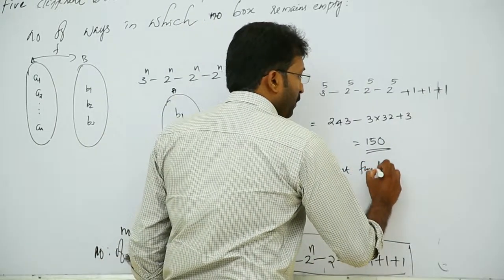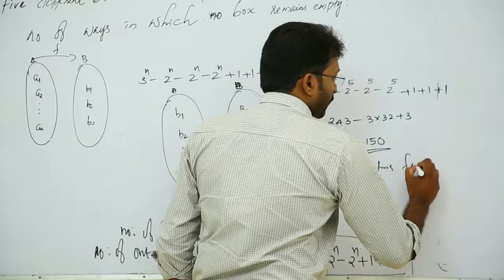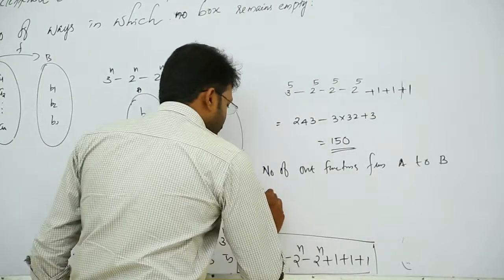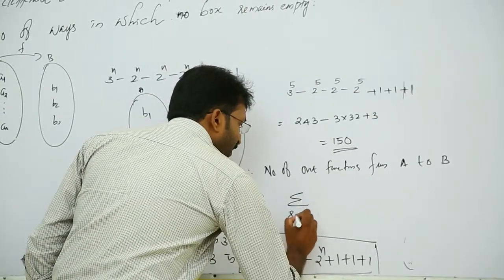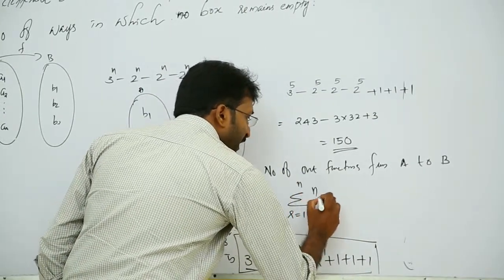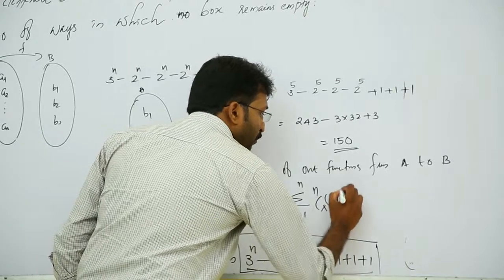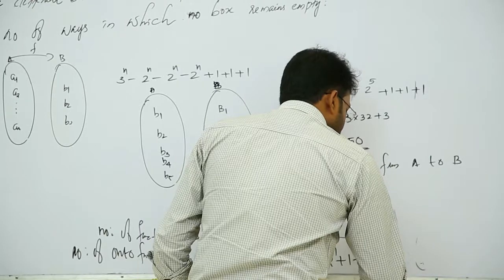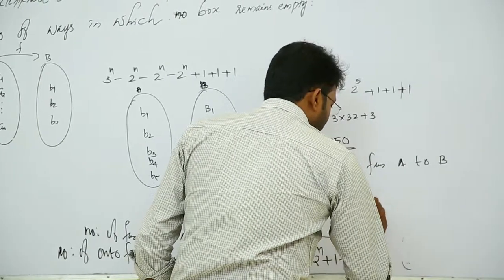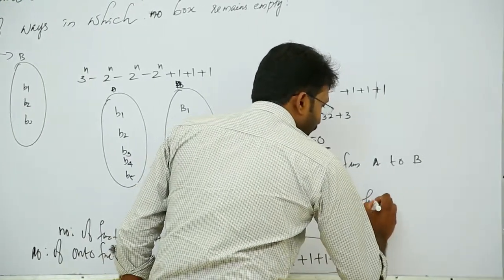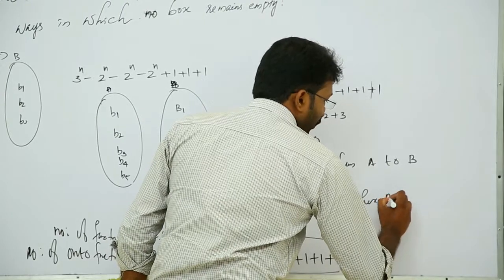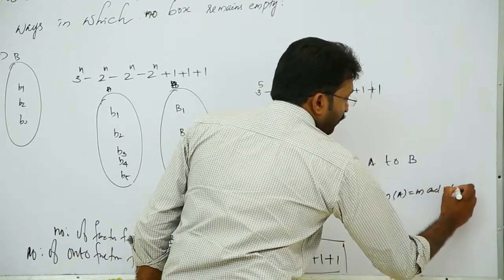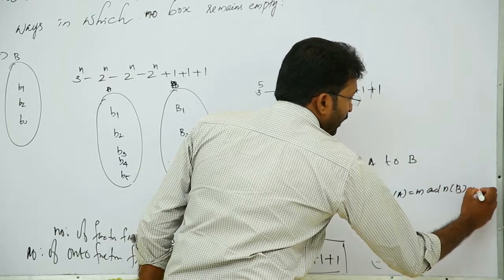Therefore, the number of onto functions from A to B is given by the formula: sigma from r equals 1 to n of (nCr) times (-1)^(n minus r) times r^m, where the number of elements in A is m and the number of elements in B is n.